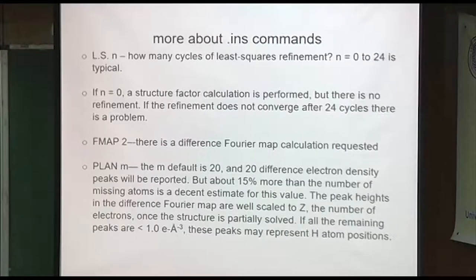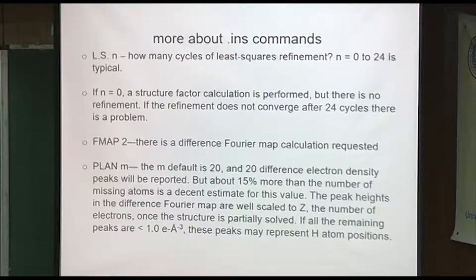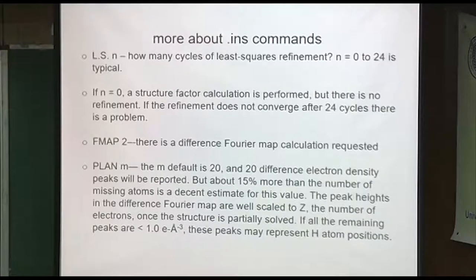The last shift should be like 0.005 or less — 0.001 — that means it's converged. It's up to you how many cycles you want to do: 8 or 12. If it's zero, that's useful too sometimes — it's only doing the structure factor calculation without actually doing the refinement; no partial derivatives are involved. The least squares procedure is used in economics and lots of other fields.